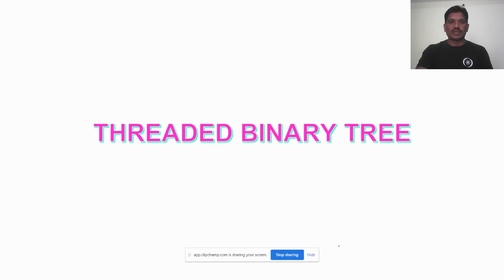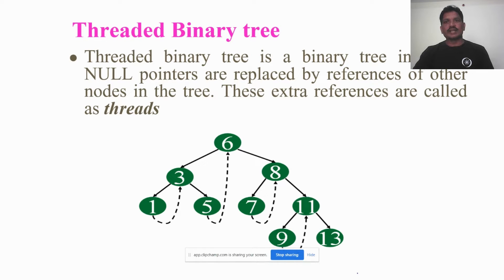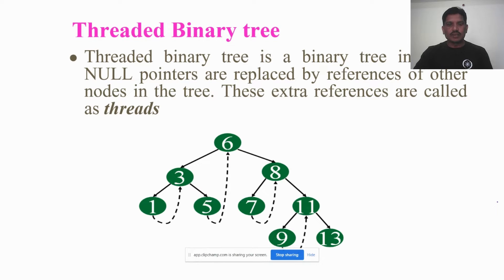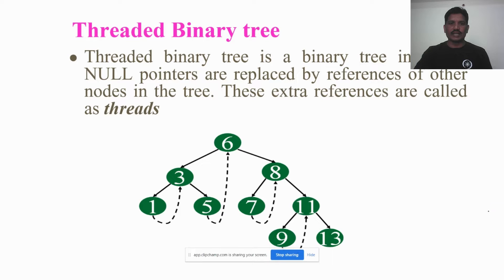What is threaded binary tree? Threaded binary tree is a binary tree in which null pointers are replaced by references of other nodes in the tree. These extra references are called threads. Generally, if a node has null pointers — either the left null pointer or right null pointer — those left pointer and right pointer which are references to the other nodes are called threads.